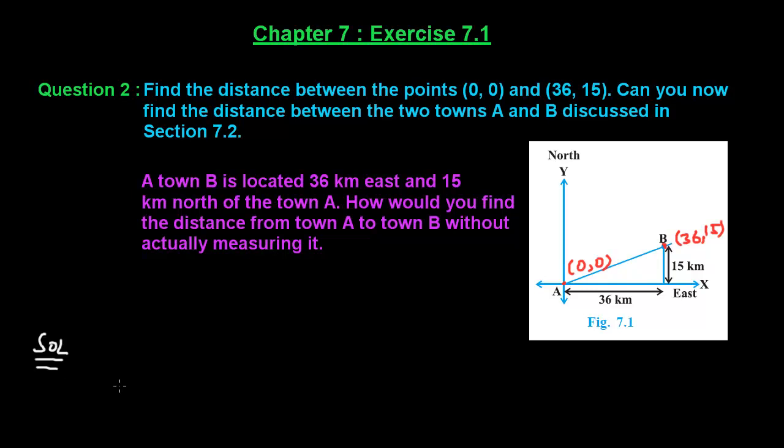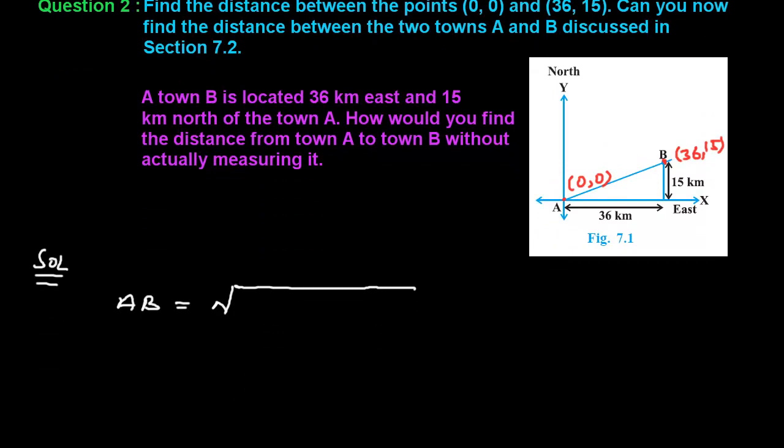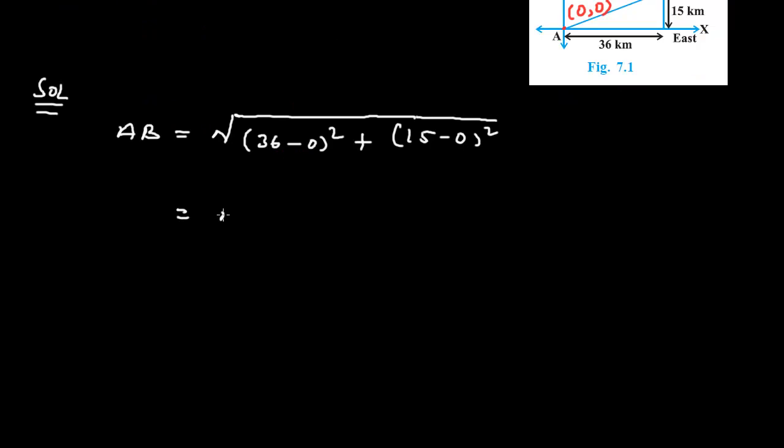We use the distance formula, which gives us the square root of (36 - 0)² plus (15 - 0)². If we simplify this...